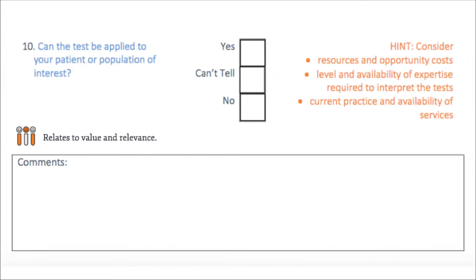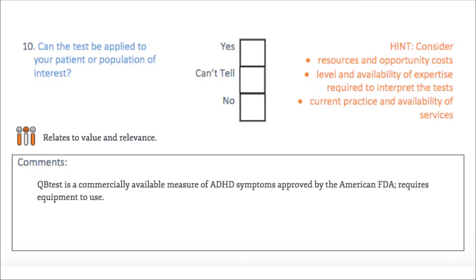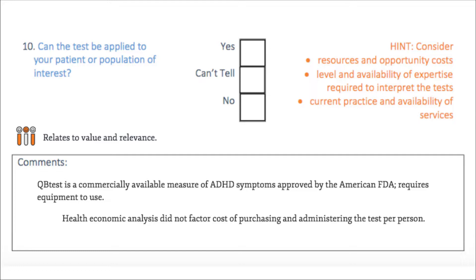What are the costs and availability associated with the new test, and how feasible is it to implement into current practice? The QB test is a commercially available measure of ADHD symptoms approved by the American Food and Drug Administration, requiring additional equipment including an infrared camera designed to track the movement of a marker attached to a headband worn during the test. The study's health economic analysis suggests that QB testing provided small cost savings for the health service and generally improved outcomes, with the QB test priced in the UK between £20 and £22 per patient. However, the economic analysis did not factor in the cost of purchasing and administering the QB test, so any cost saving claims should be interpreted with caution.